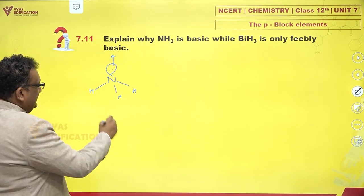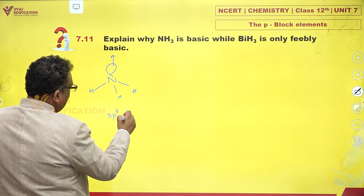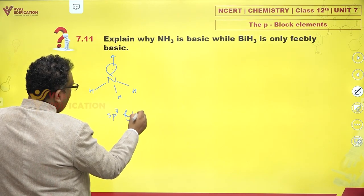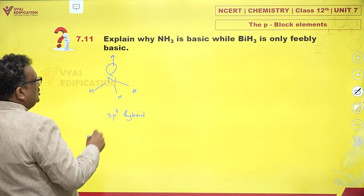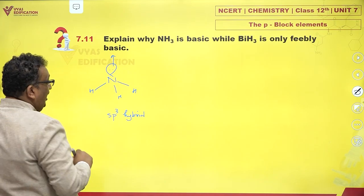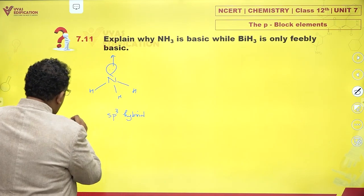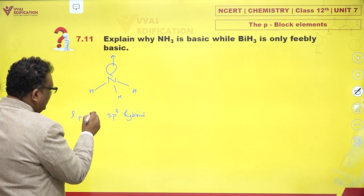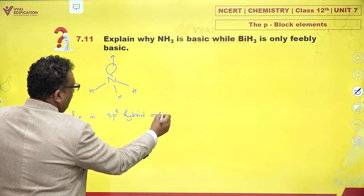Ammonia is sp3 hybridized, so the lone pair also lies in an sp3 hybrid orbital.